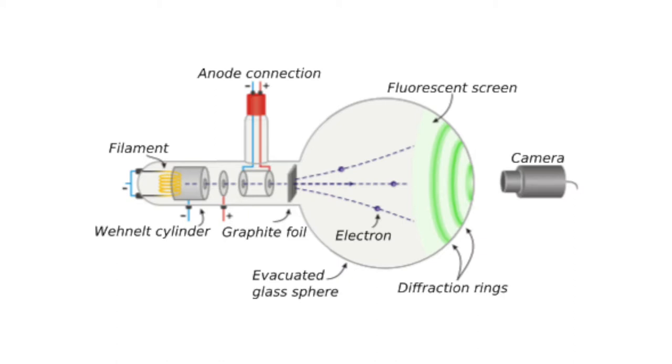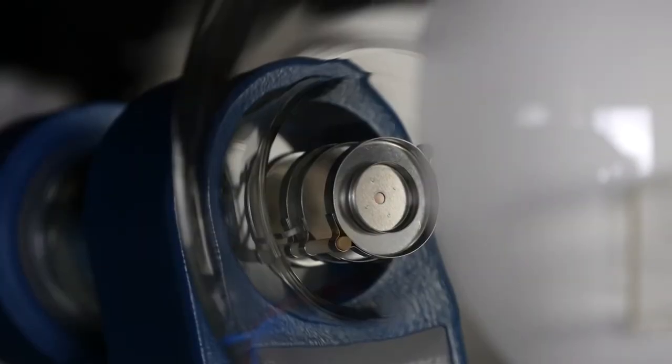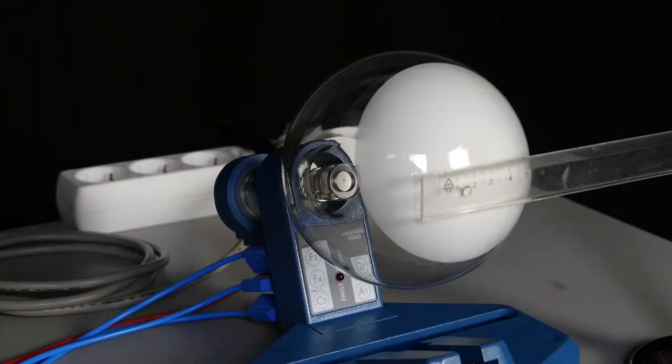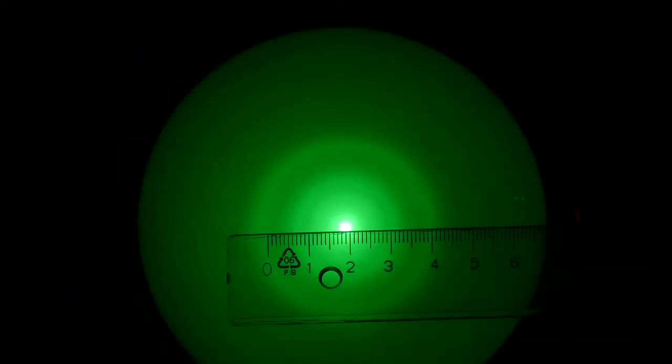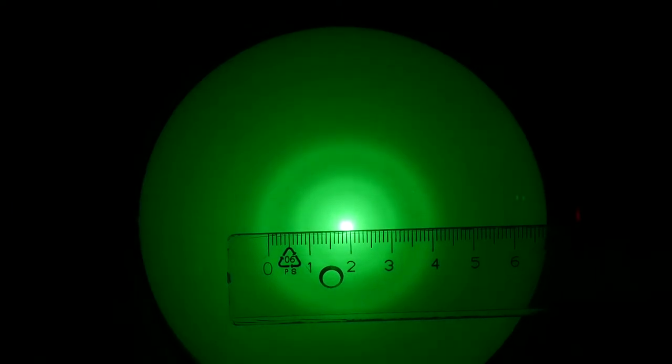If a voltage u is applied to the electron tube, electrons are accelerated and hit the graphite target where they are diffracted analogous to the diffraction of x-rays. With the help of the fluorescent screen, impinging electrons can be made visible. Here they produce diffraction rings. These are recorded by a camera.